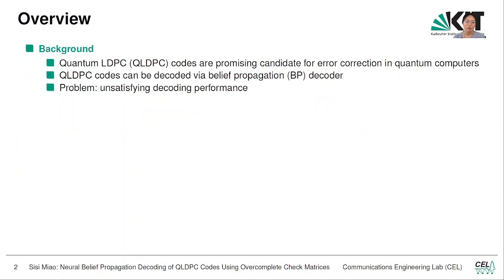I would like to start with some background. We are looking at error correction for quantum computers, and more specifically we look at decoding quantum LDPC codes which is a promising candidate for this task. Quantum LDPC codes can be decoded just as their classical counterpart with a belief propagation decoder. The problem is that due to the special properties of quantum codes, the decoding performance is usually not satisfying.